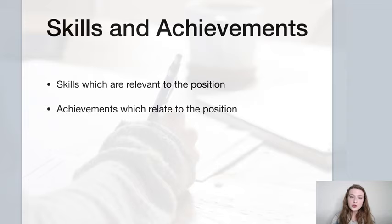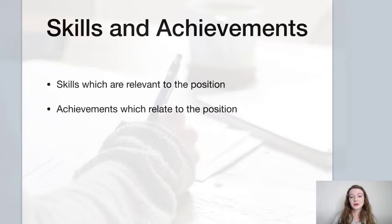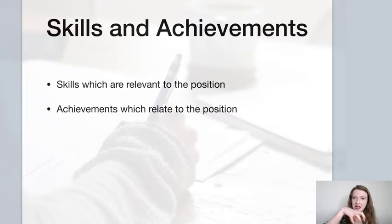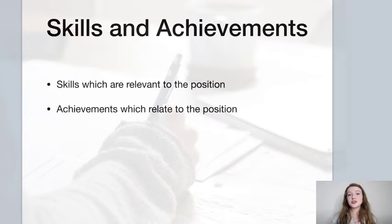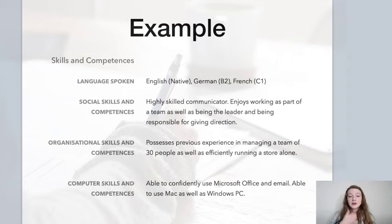The next section is skills and achievements — probably one of the most important parts. Write down skills that are relevant to the position. I've read CVs with completely unrelated achievements and skills. If you have certificates for training that aren't in your formal education, this is where you can put them. For example, I've had people applying for office jobs who listed level-two food safety training — that doesn't relate to the office job at all, so remove it. The employer won't care.